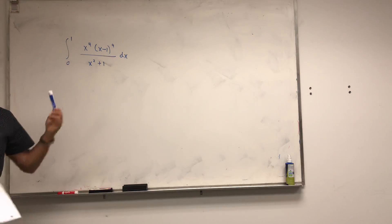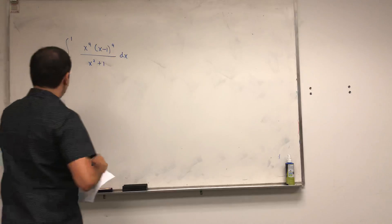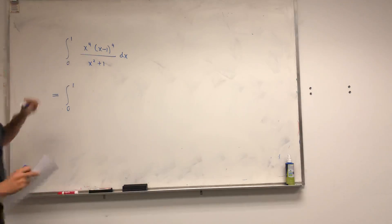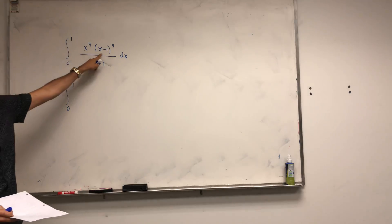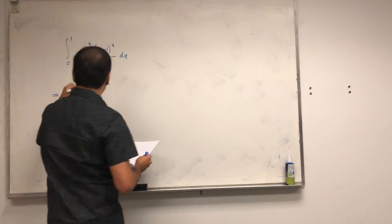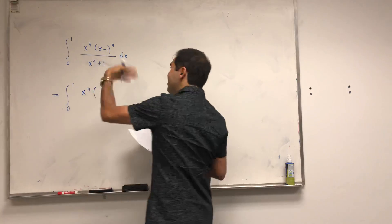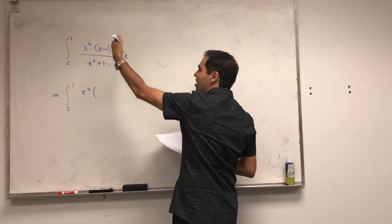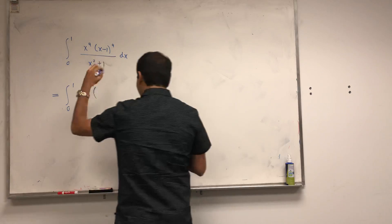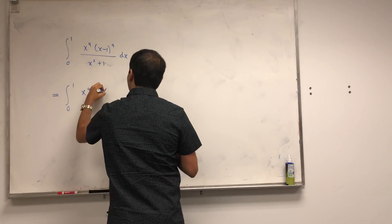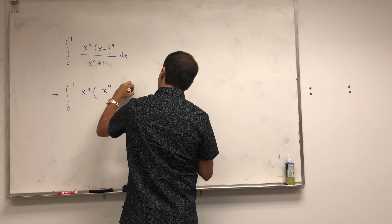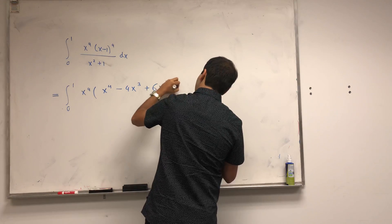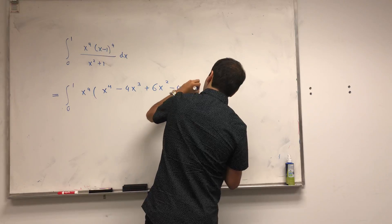It turns out it's not too bad to calculate because it's just a partial fraction decomposition. Let's first expand out x minus 1 to the fourth — I'm going to skip some details, so you can expand it out or use Pascal's triangle. You get x to the fourth minus 4x cubed plus 6x squared minus 4x plus 1.